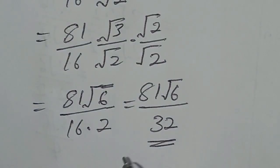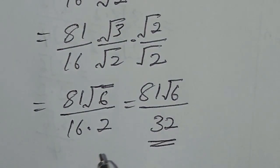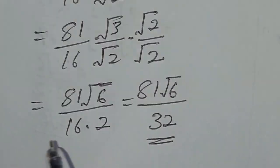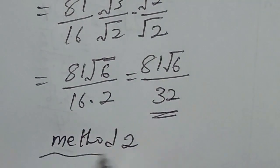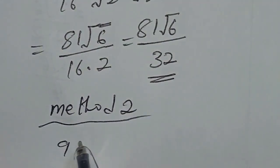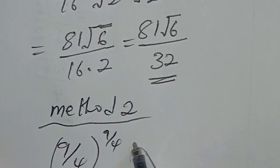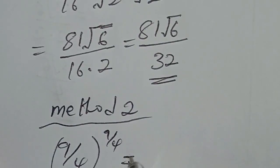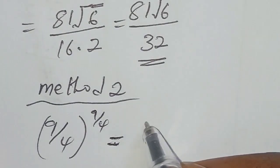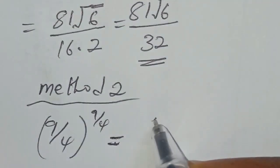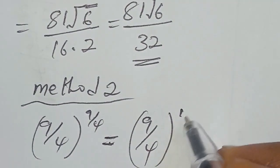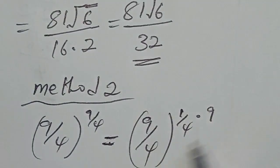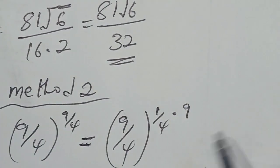Another method to solve this, to broaden your knowledge, is to use the root trick. For Method 2, we have 9 over 4 to the power of 9 over 4. We can split this as (9/4) to the power of 1 over 4, multiplied by (9/4) to the power of 9 — meaning we take the fourth root of 9 over 4, raised to the power of 9.